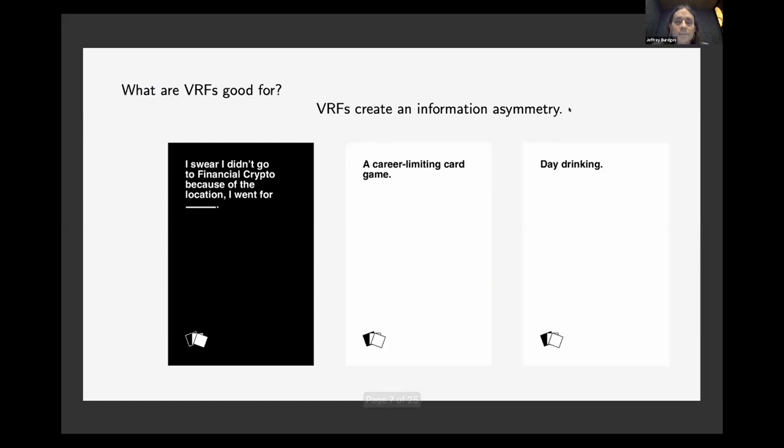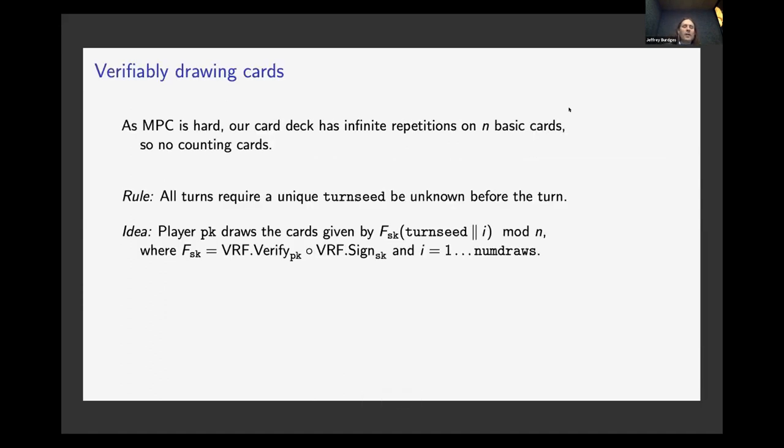So what I really want to tell you about is card games. What are these things good for? Basically what VRFs do is they give you an information asymmetry. I have something I want to reveal at some point in time, but I don't want to reveal it too early. So we're going to use some cards to the extent possible. We're going to use Cards Against Cryptography as the example, because this event is nominally associated with real world crypto, and that's the game of real world crypto.